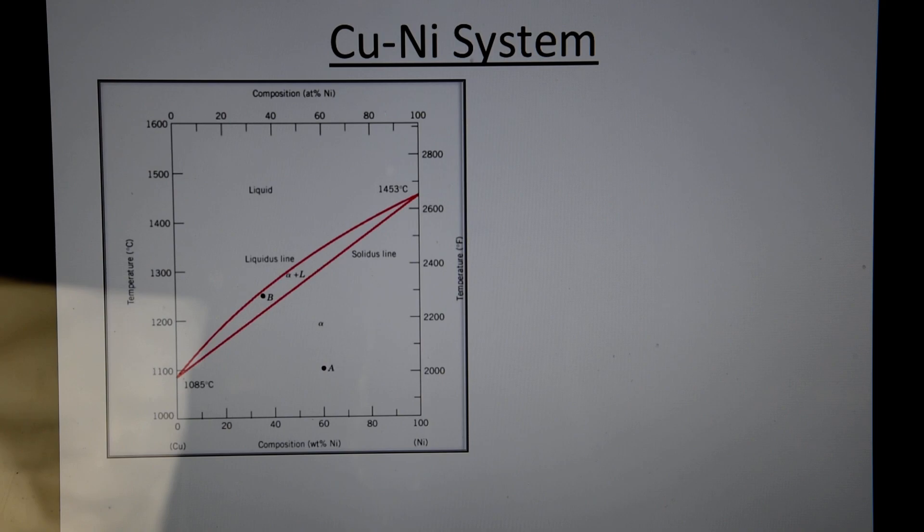So now we'll talk about the copper-nickel system. As we saw earlier, copper and nickel are really close in the diagram I showed earlier, they're very close to each other. So they have quite similar atomic structure. As you can see here, on this horizontal axis, we have the composition of nickel, which is called the weight percent of nickel. There are three main regions in this phase diagram.